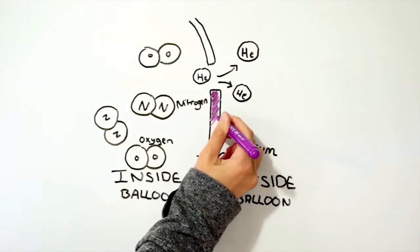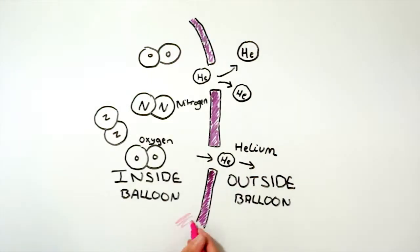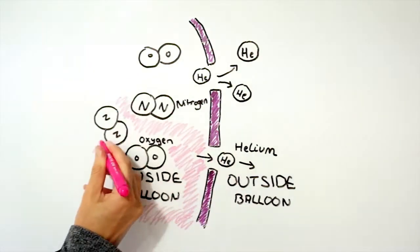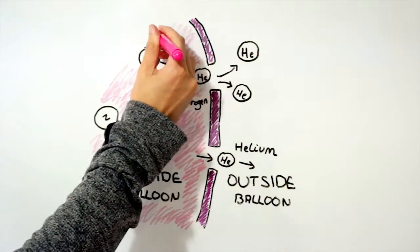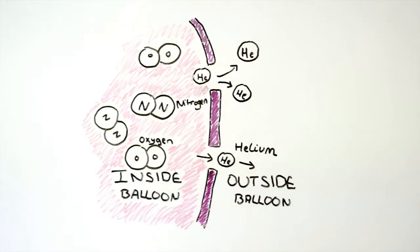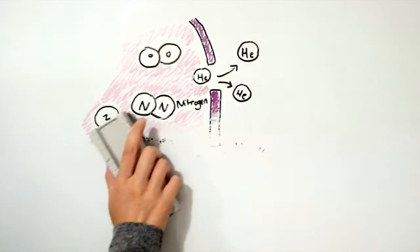If you imagine that the balloon is a pile of spaghetti, helium would be like sprinkling peas on it, whereas oxygen and nitrogen are more like meatballs. The peas would slip through the spaghetti much easier than the meatballs would.